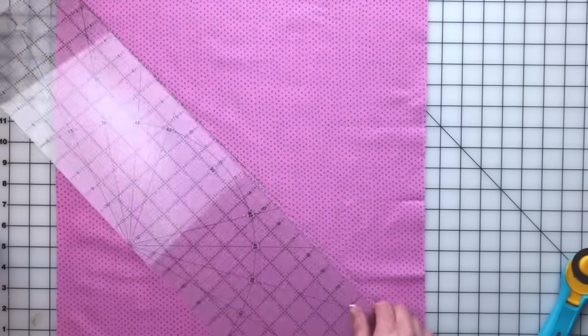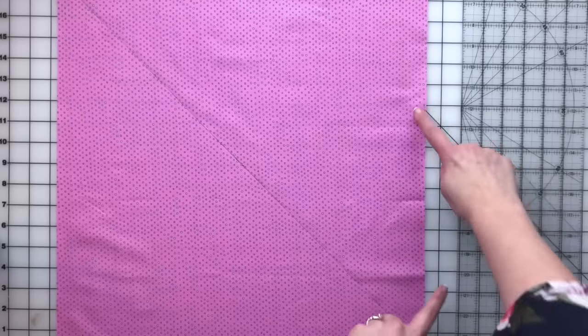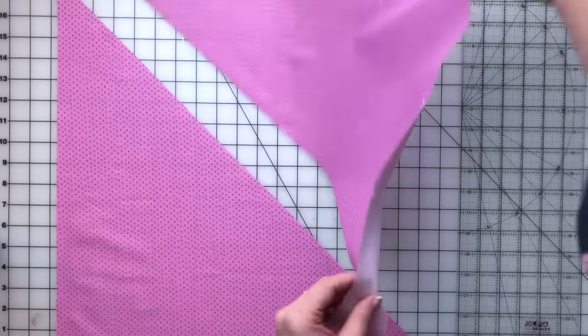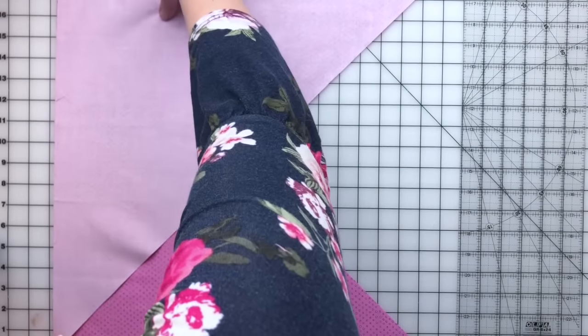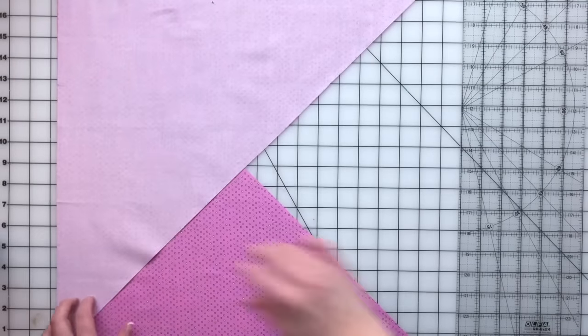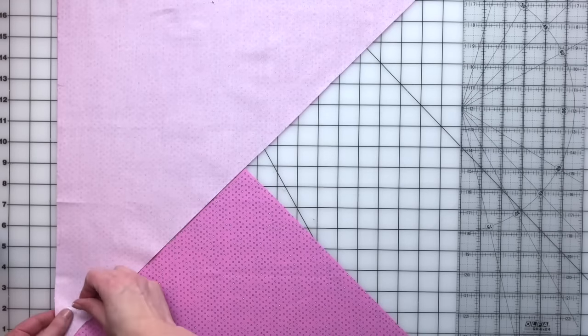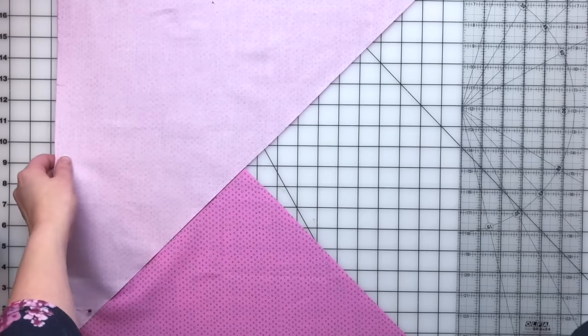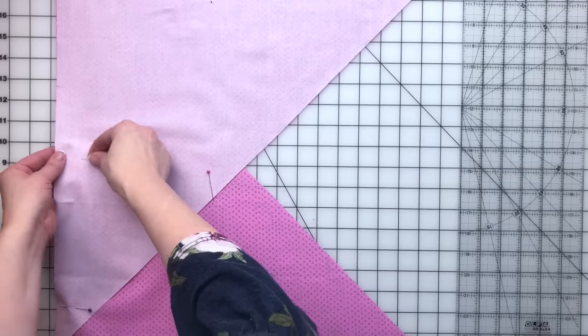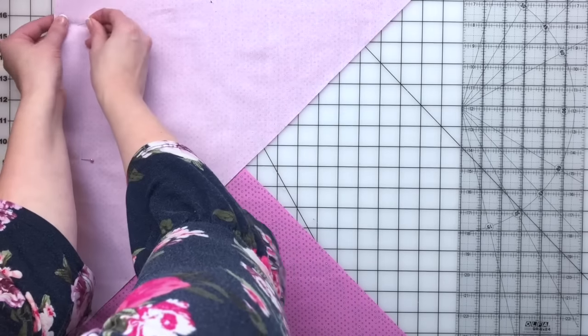Once that is done, the next step is to take this edge of the square, flip it over and place it along the opposite edge. Once those edges are lined up, go ahead and pin them so that when you move the pieces to your sewing machine they won't move.